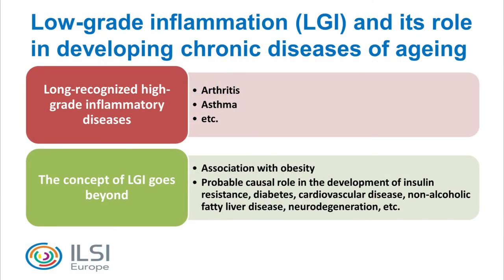Over the last few years it's become increasingly recognized that inflammation has an important role in the development of chronic diseases of aging. This goes beyond the long-recognized role of inflammation in chronic high-grade inflammatory diseases like arthritis and asthma. There is a lower level of ongoing inflammation associated with diseases like obesity, and it probably plays a causal role in the development of insulin resistance, diabetes, cardiovascular disease, non-alcoholic fatty liver, and neurodegeneration.